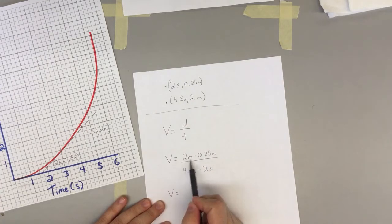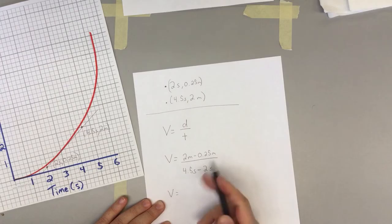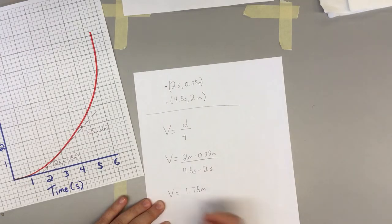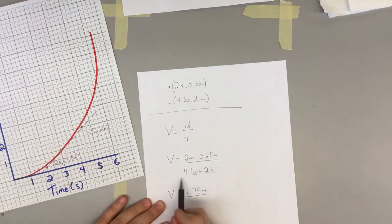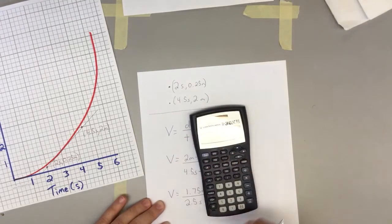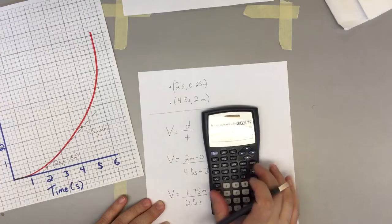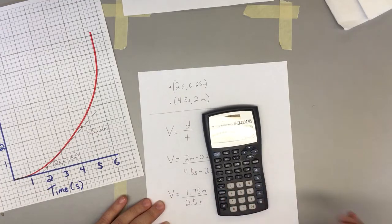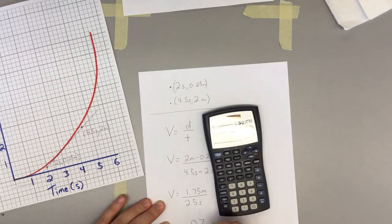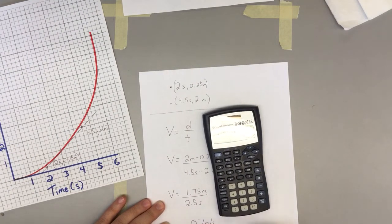So two meters subtract our starting 0.25 meters gives us 1.75 meters. And we can say they traveled that in 4.5 subtract two is 2.5 seconds. Get out your fancy calculator. 1.75 divided by 2.5 is 0.7 meters per second.